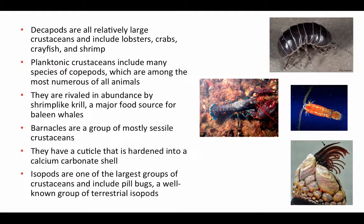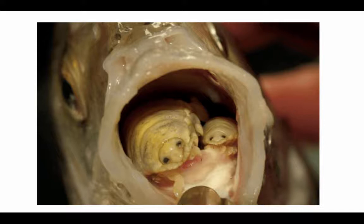Isopods are one of the largest groups of crustaceans and probably one of the least well-known. They include terrestrial species like pill bugs, which roll into a perfectly protected sphere when threatened. But there are also marine isopods — one particularly interesting species is often found in the mouths of fish, commonly known as tongue-eating lice. These isopods crawl in through the gills of a fish, attach to the tongue, and suck the blood, cutting off blood supply until the tongue eventually falls off.